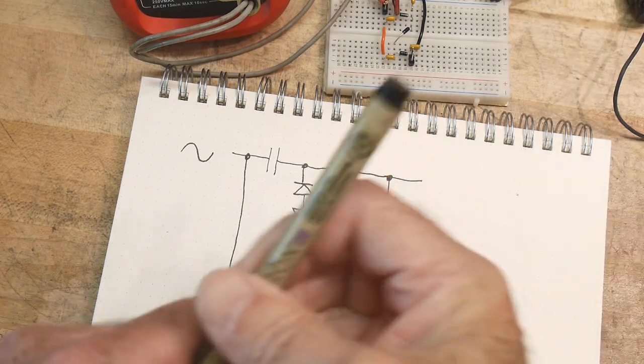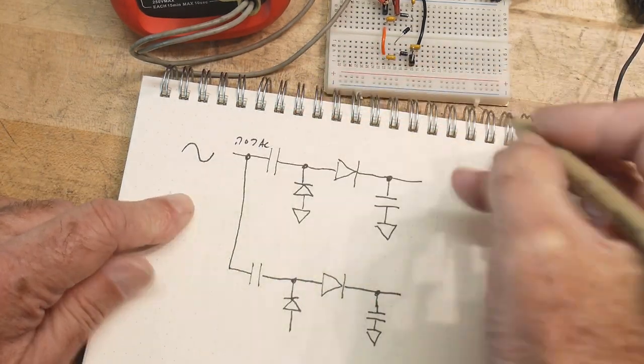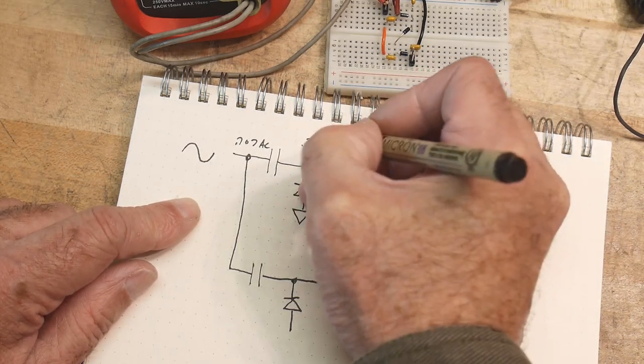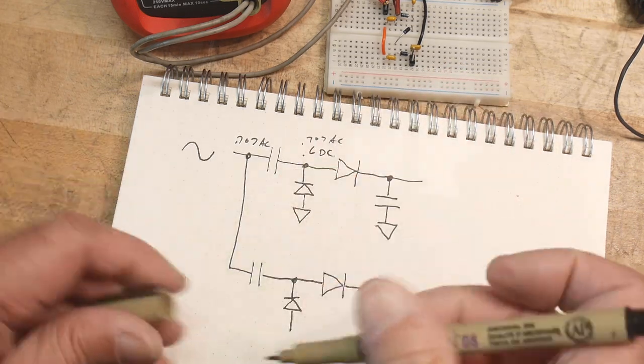So we have 0.58, let's write that down. We have 0.707 AC, and we have 0.707 AC, and we have 0.6 DC, right here.